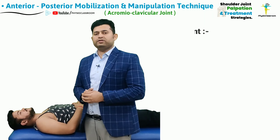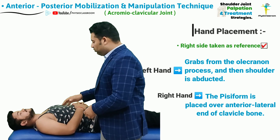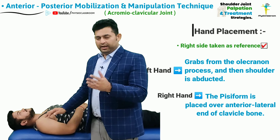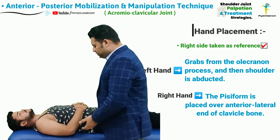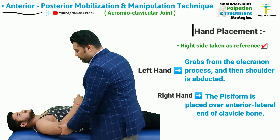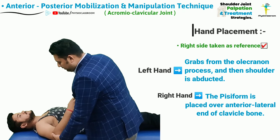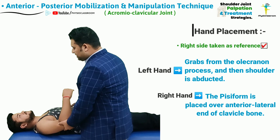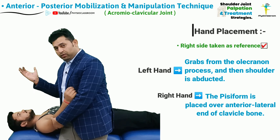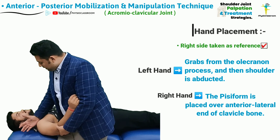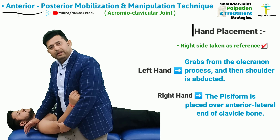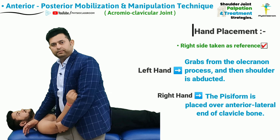The two contact points of the therapist are as follows: to mobilize the right-sided acromioclavicular joint, the left hand is going to stabilize at the olecranon process and take the shoulder into an abducted position, whereas the right hand pisiform contact is going to be placed directly over the anterior lateral end of the clavicle.